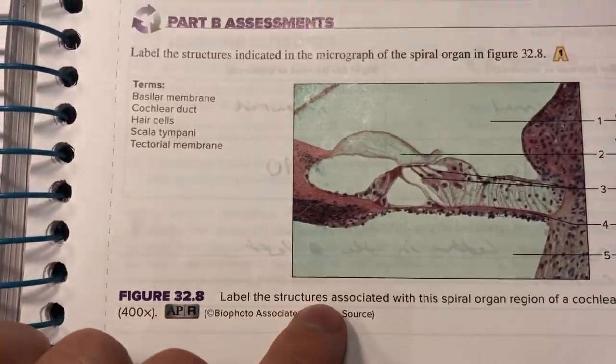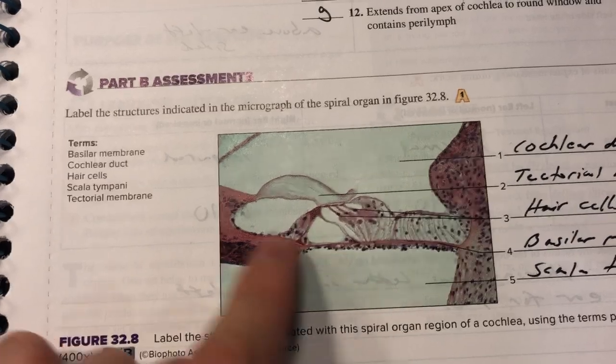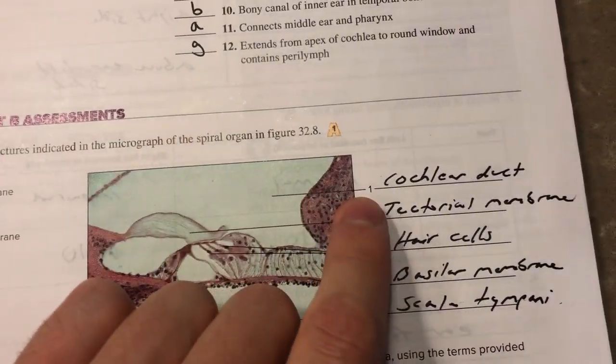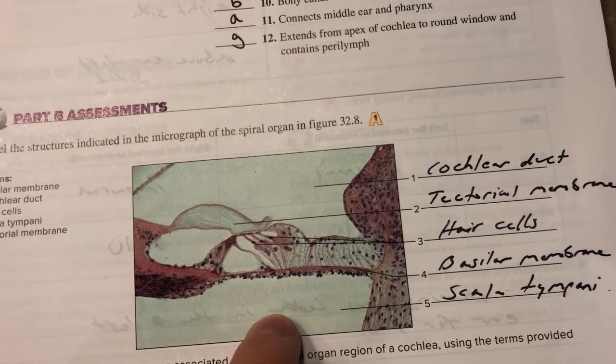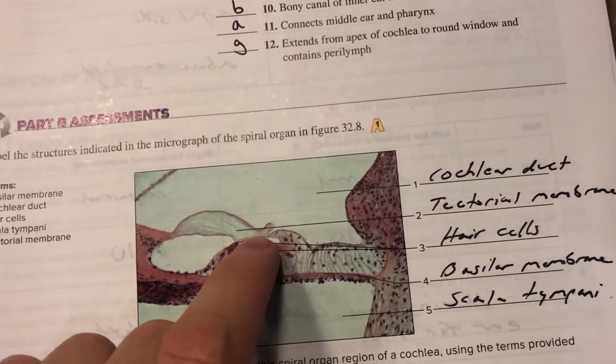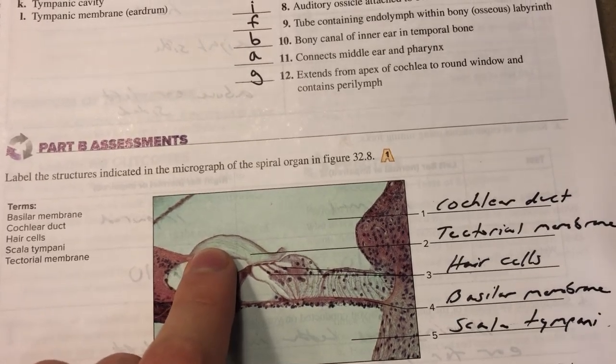Where it exits and that extends from the apex of the cochlea to the round window and contains perilymph. So then you have an actual microscope diagram right here. This is the cochlear duct, this is the scala tympani, basilar membrane, hair cells, and the tectorial membrane.